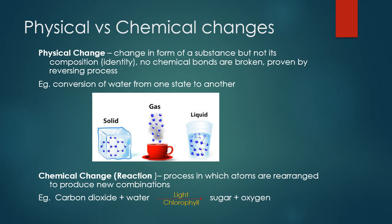Now let's look at physical versus chemical changes. A physical change is a change in the form of a substance but not its composition — no chemical bonds are broken, just a phase change. An example is an ice cube melting: it goes from solid to liquid, but it's still water. A good way to identify a physical change is to check if it can be reversed — a melted ice cube can be refrozen.